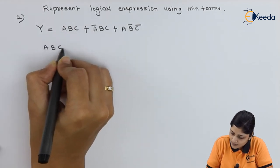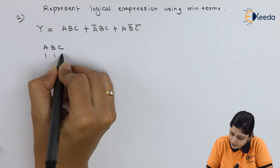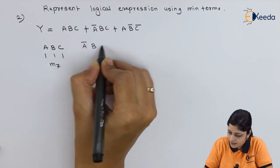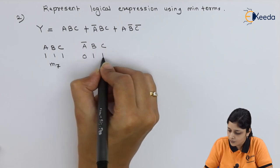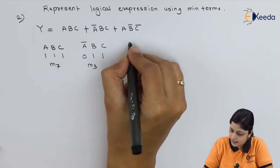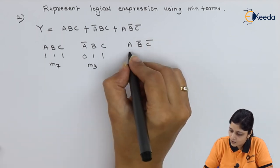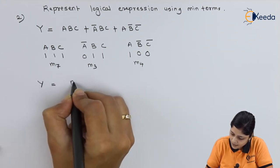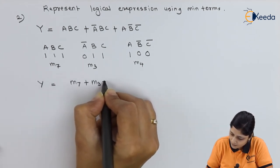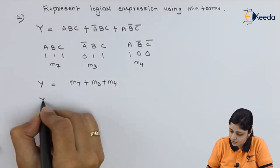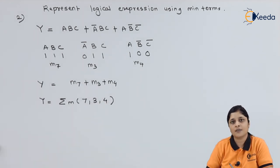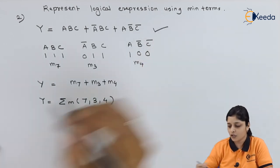Take each term: a·b·c gives 1 1 1, which is m7. You have to identify all the minterms. ā·b·c means 0 1 1, so it is m3. Then a·b̄·c̄ is 1 0 0, the binary for 4, so the minterm is m4. In another way you write m7 plus m3 plus m4, and finally the logical form is summation m(7, 3, 4), which is the answer for the given logical expression.